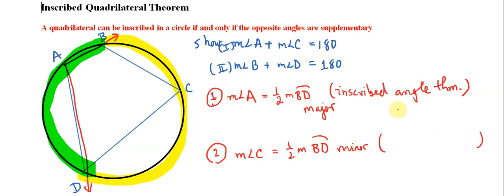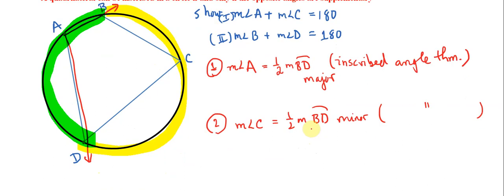Really by the exact same reason, the inscribed angle theorem. Now what we can do is then take these two equations and add them, add the left side of the equation and add the right side of the equation. So step three, and this is just substitution, is that the measure of angle A plus the measure of angle C is equal to one half of BD major plus one half the measure of arc BD minor.